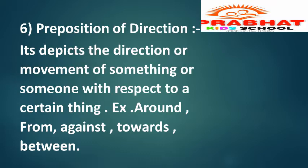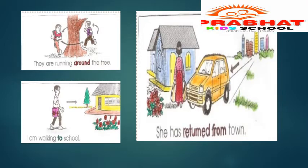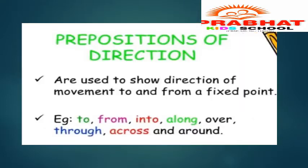The preposition of direction shows the direction or movement of something or someone with respect to certain things. Examples include: around, from, against, between, and towards. For instance, 'The earth revolves around the sun' — showing movement in a particular direction. 'I am fighting against my enemy' — showing a specific direction of approach. 'The Roman army is approaching towards us from the northern part of the country' — showing direction of movement.